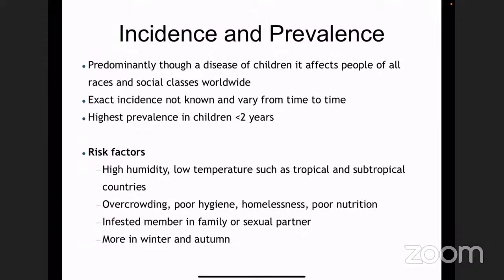The risk factors — as it's common in a country like ours — include overcrowding, poor hygiene, homelessness, high humidity, and low temperature. It is very rampant in the family; even one particular member having scabies can spread it to the entire family. There is also a seasonal variation noted: it is more common in the winter and autumn seasons.